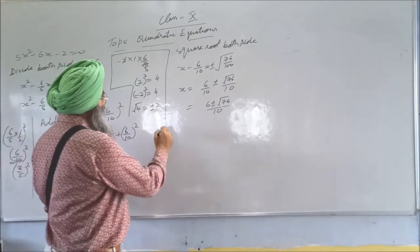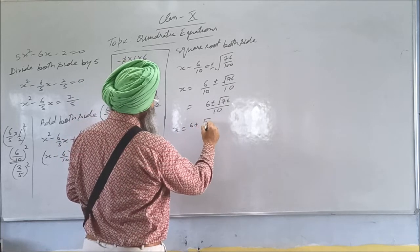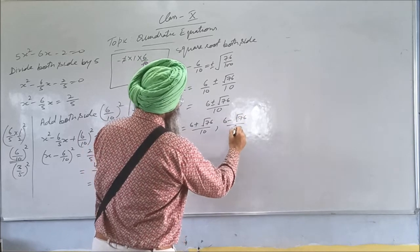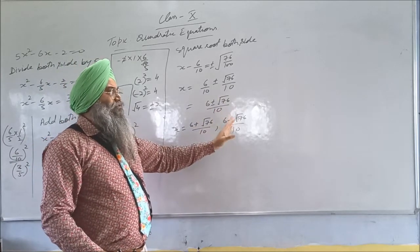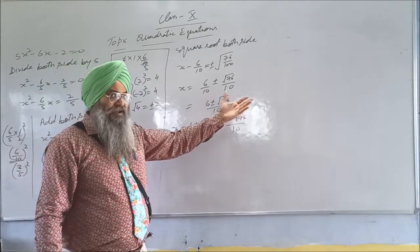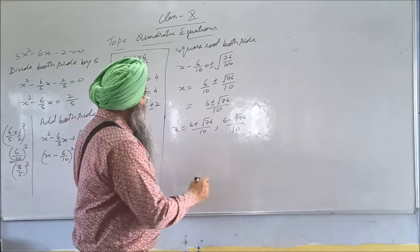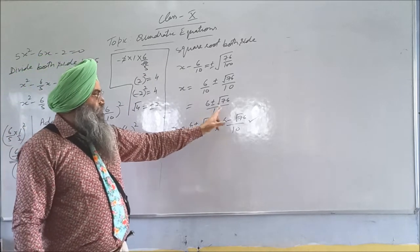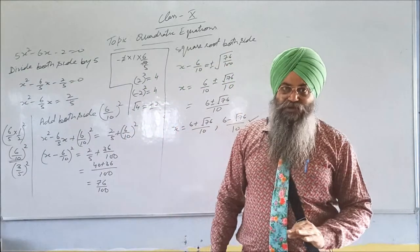So that means the roots are either (6 plus root 76) upon 10, or (6 minus root 76) upon 10. You can simplify square root 76 further if it can be simplified. So these are the two roots by using the completing the square method.